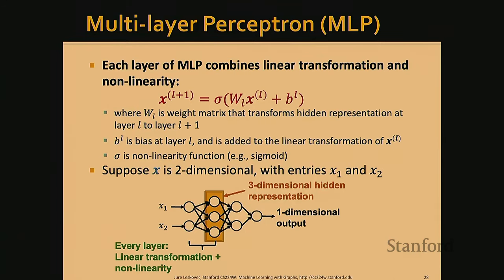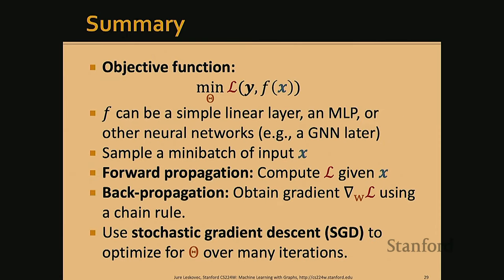A concrete example: a two-dimensional input goes through an MLP with a three-dimensional hidden layer, producing a one-dimensional output. To summarize, we formulate machine learning as an optimization problem to find optimal θ — where F can be a linear layer, MLP, or complex graph neural network. We train via forward propagation for inference and backpropagation to optimize θ using gradient descent.